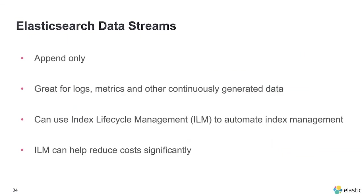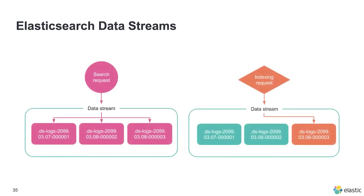Moving from indexes into data streams has proved incredibly beneficial for us because it's allowed us to age data into warm and cold nodes and help save significant money. Data streams tend to be append-only and are great for logs, metrics, and other continuously generated data. We use ILM to automatically help with index management. A search request is done over all the data stream backing indices, whereas a write operation is only applied to the last backing index.